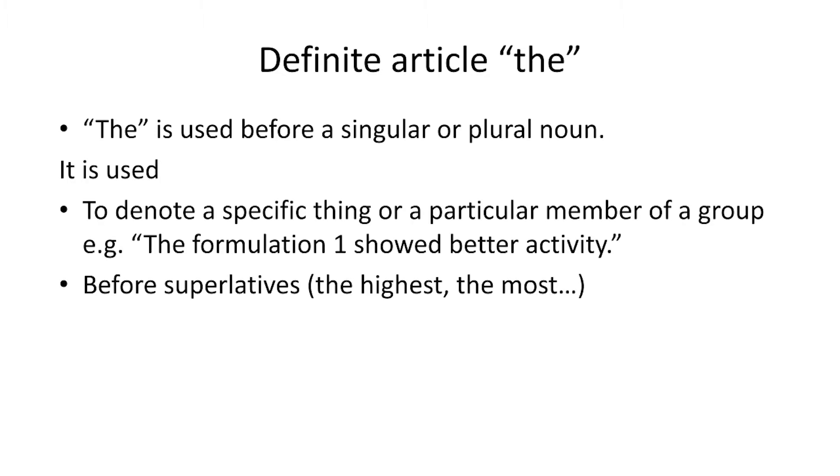It is used to denote a specific thing or a particular member of a group. For example, 'the formulation one showed better activity.' We are writing about that particular formulation. It is a specific, definite formulation that we are talking about, which is why we use the definite article.